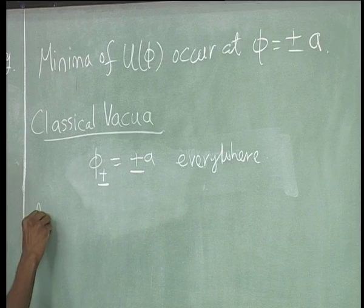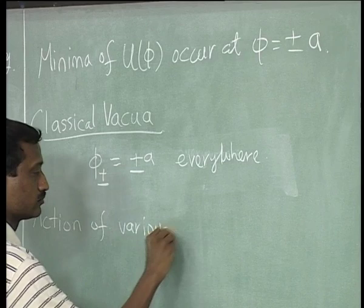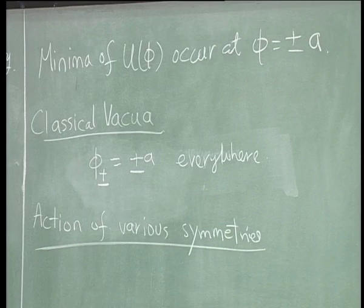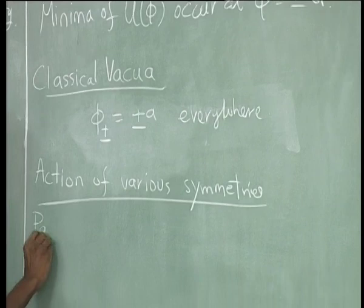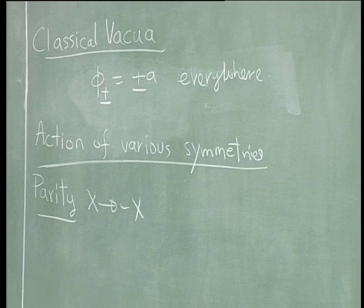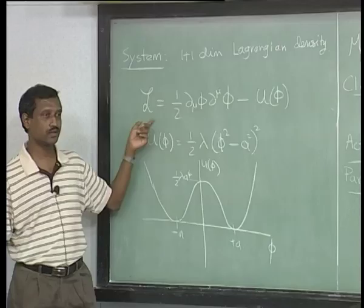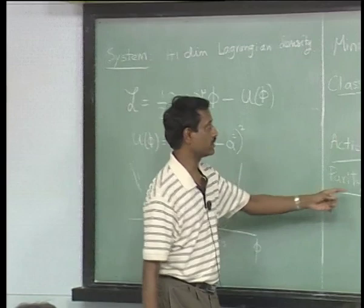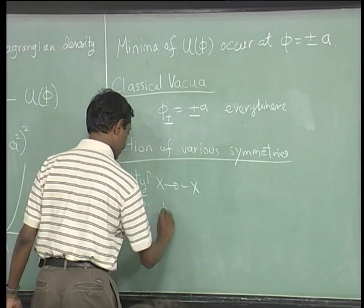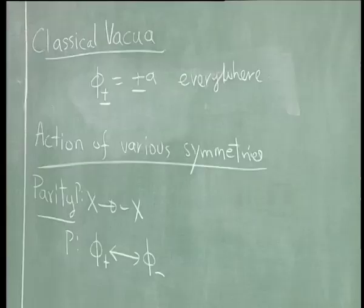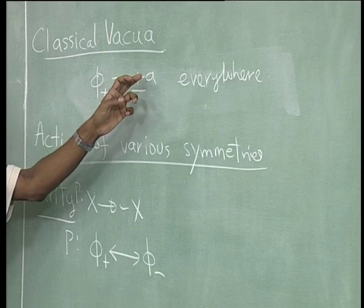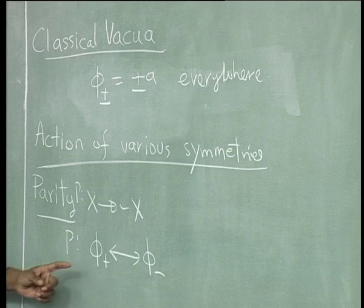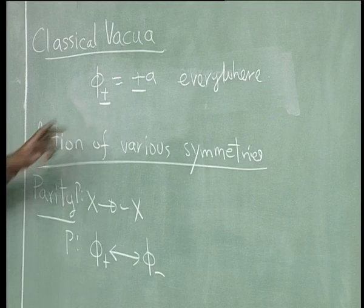Let us look at the action of various symmetries. If you look at parity — x goes to minus x — we are in 1+1 dimensions. Parity is a symmetry of the Lagrangian density, but if you look at the solution under parity, φ₊ and φ₋ get exchanged. So parity is not a symmetry of the solution.